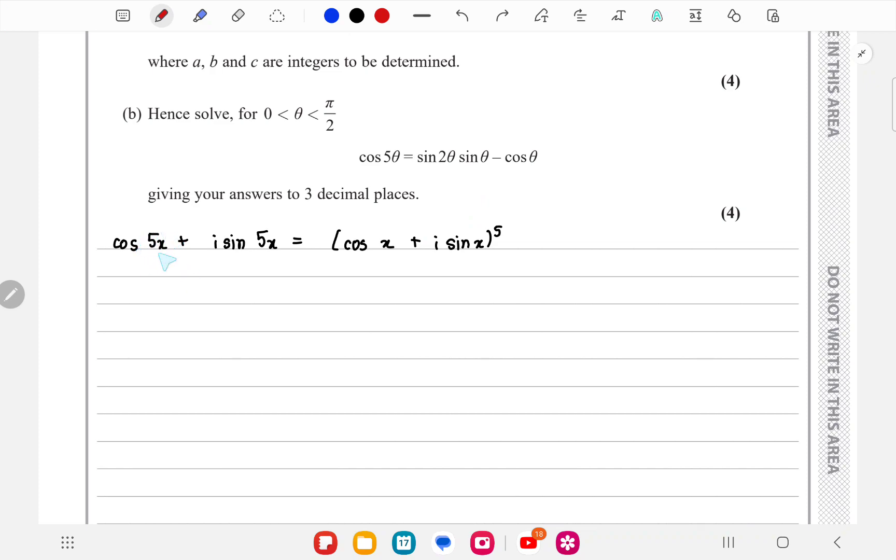Now cos 5x is the real part of this expansion, so if we just take the real terms of the expansion (cos x + i sin x) to the power 5, we'll get...